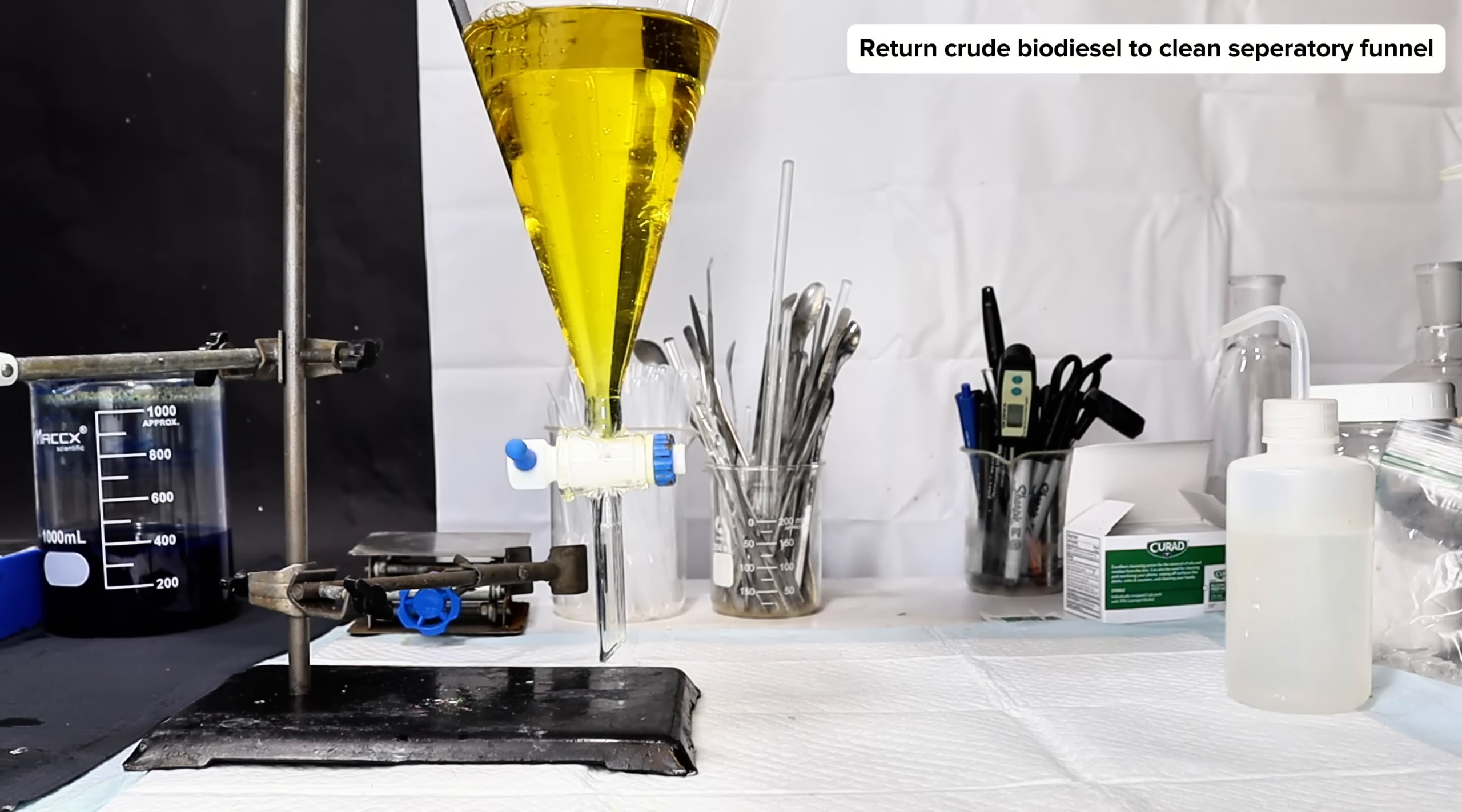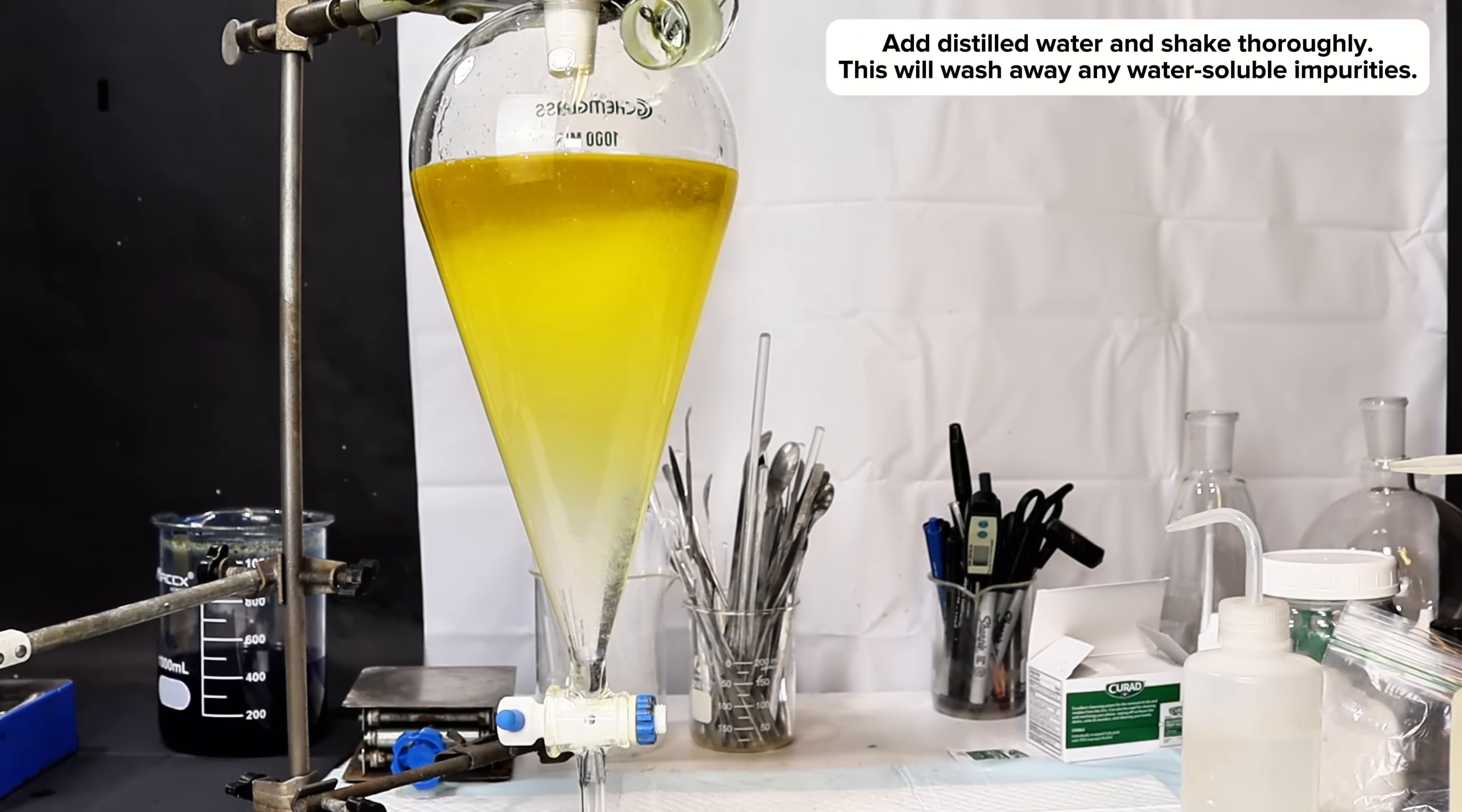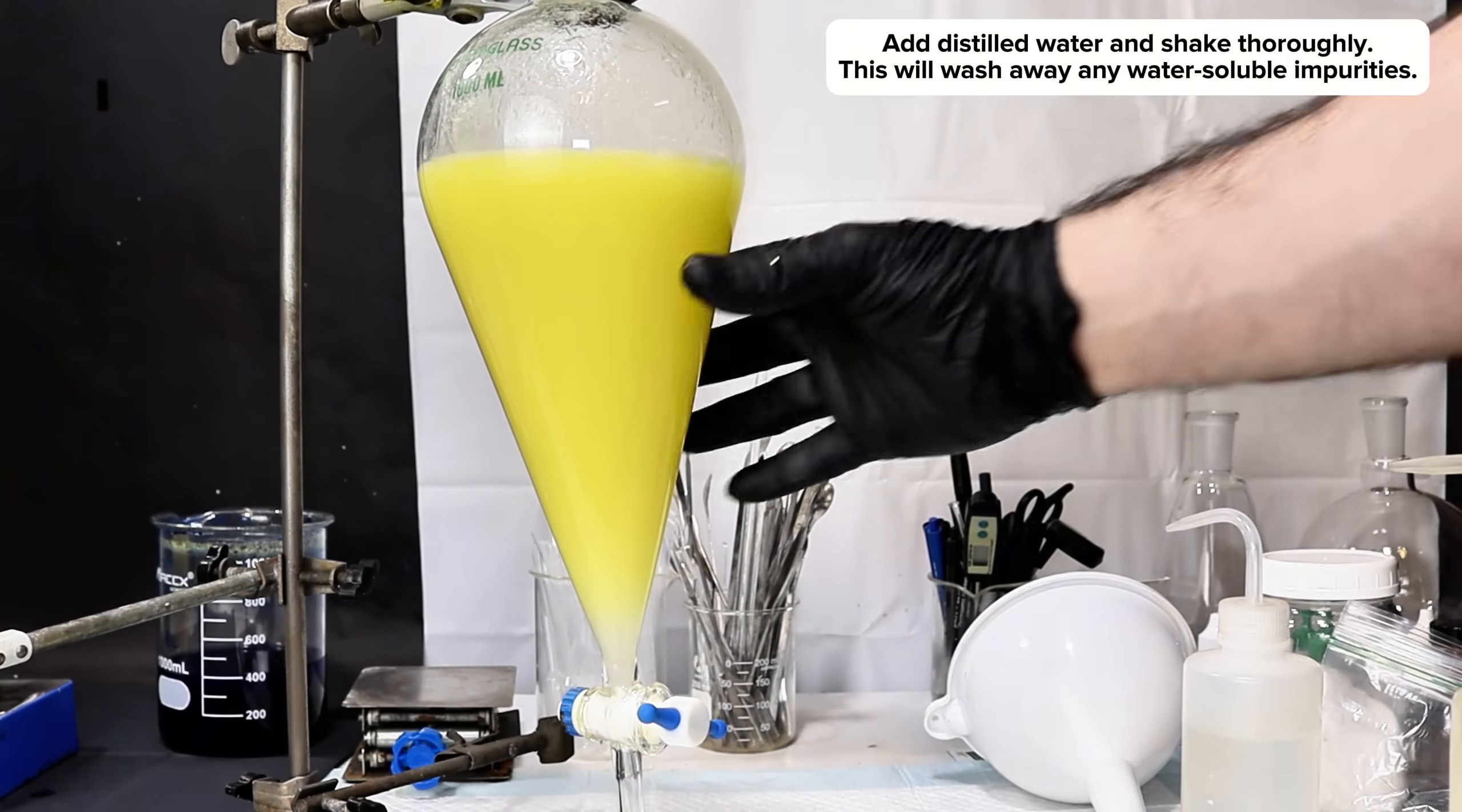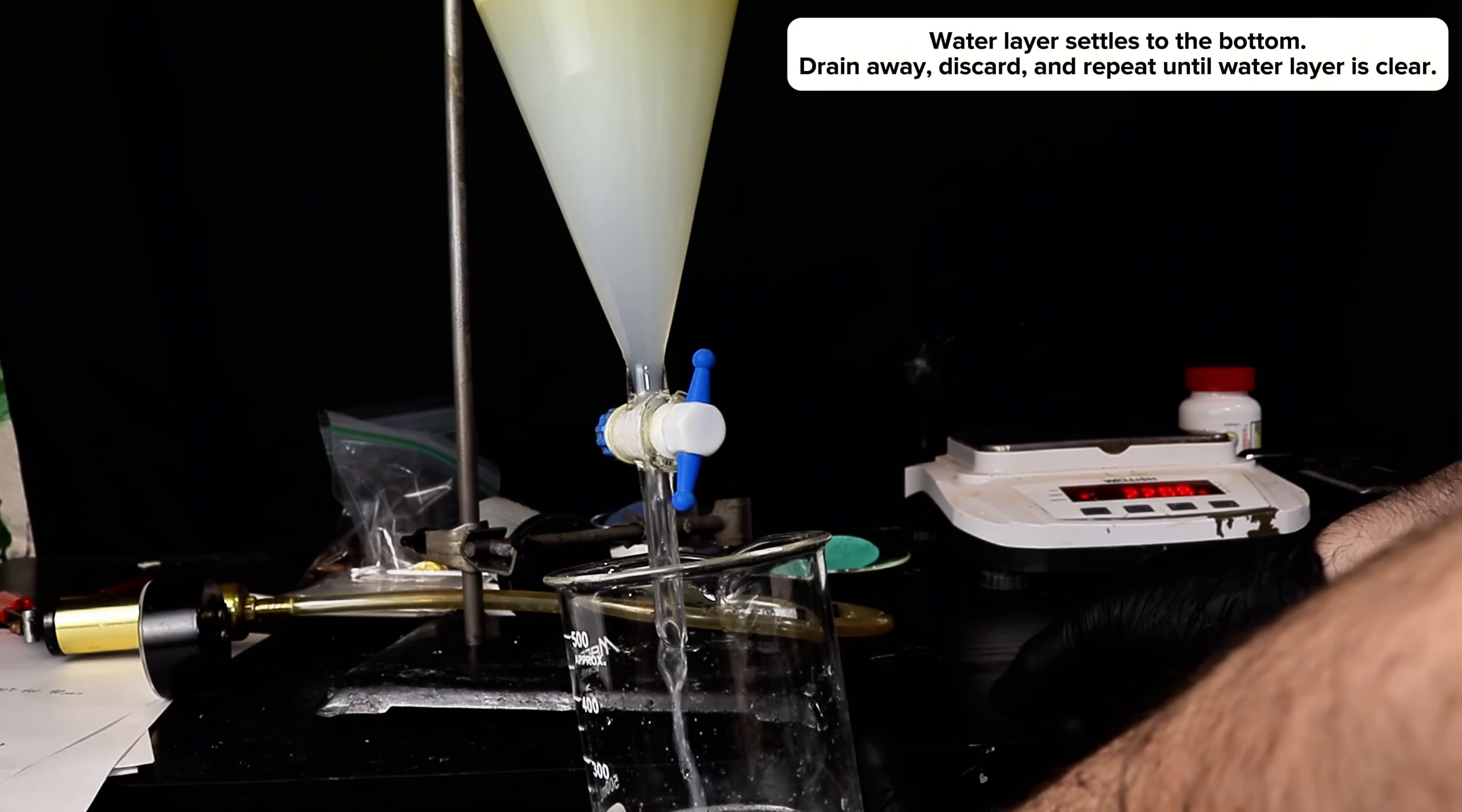Once it was nice and clean, I returned the biodiesel to the separatory funnel along with 400 milliliters of water. I gave this a vigorous shake and allowed the aqueous layer to settle to the bottom. This step will help wash away any soaps or unreacted hydroxide from the biodiesel.